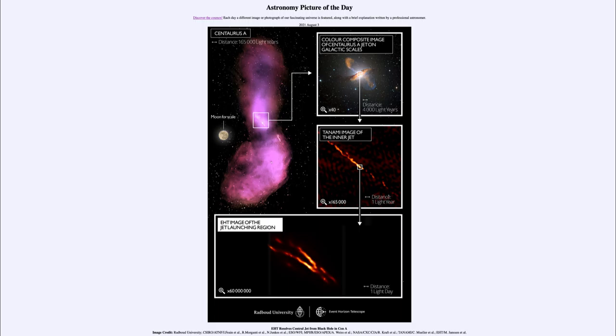Today's picture for August the 4th of 2021 is titled 'EHT Resolves Central Jet from Black Hole in Cen A.'